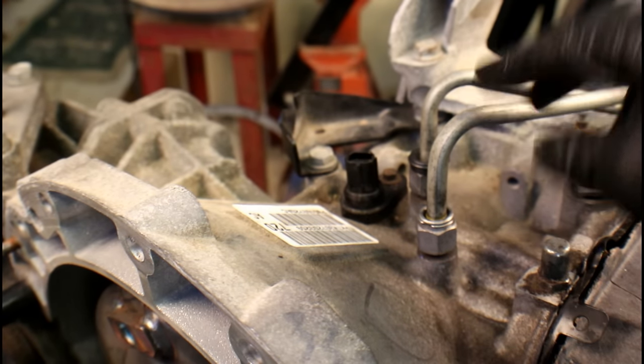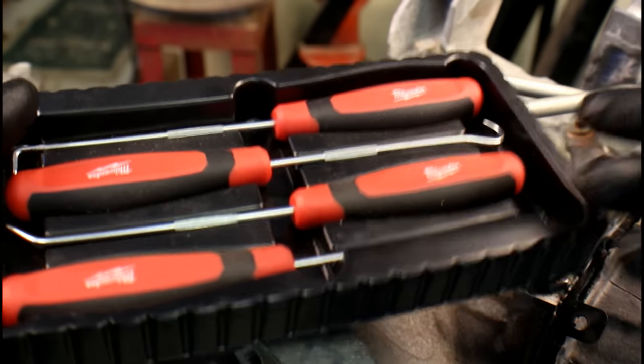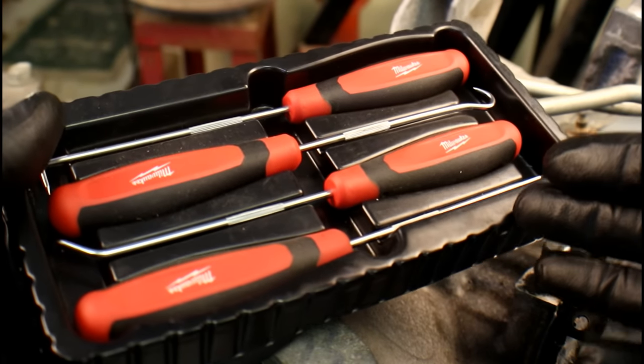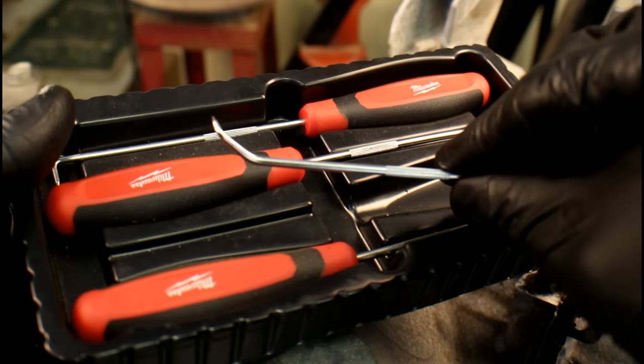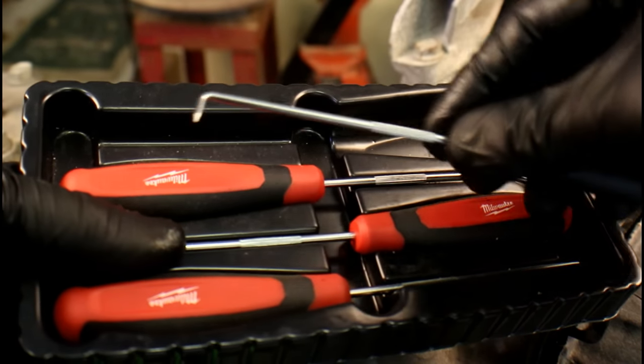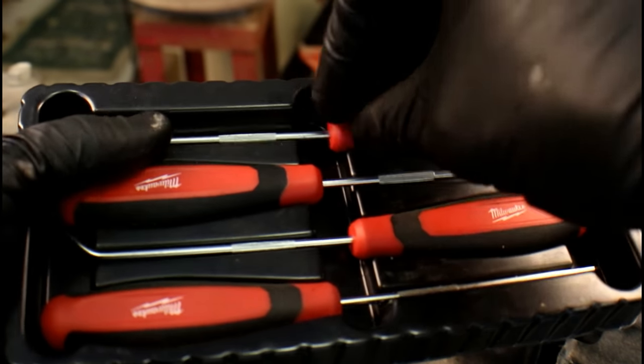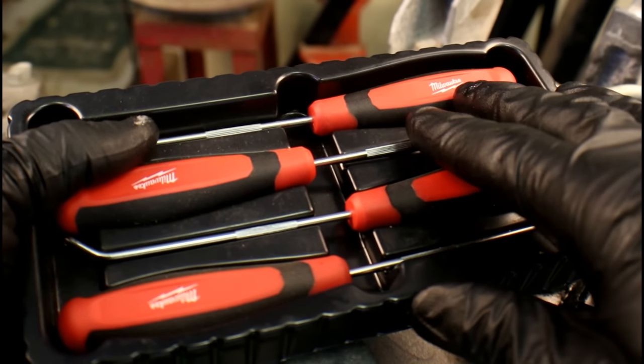Now instead of using the special tools to take those trans lines off, what I prefer to do is grab a pick. Now this is a set from Milwaukee Tools. I love to use the multi-angled one, that seems to get in there the best. The other one that works well is the 90 degree angle. If you don't have a pick set, a small flat tip screwdriver will work just as well.